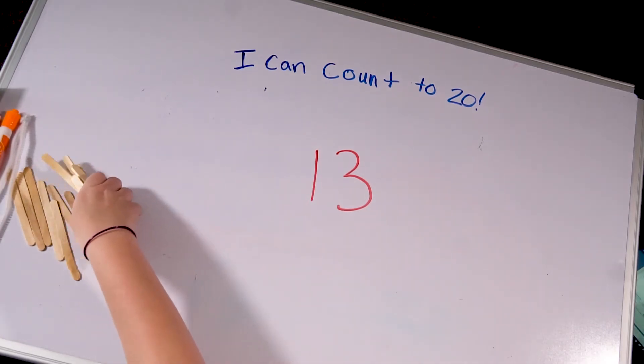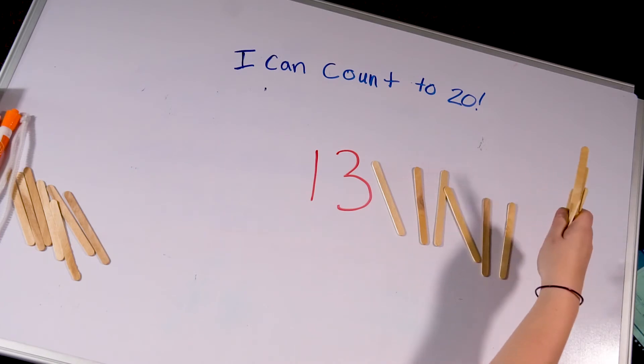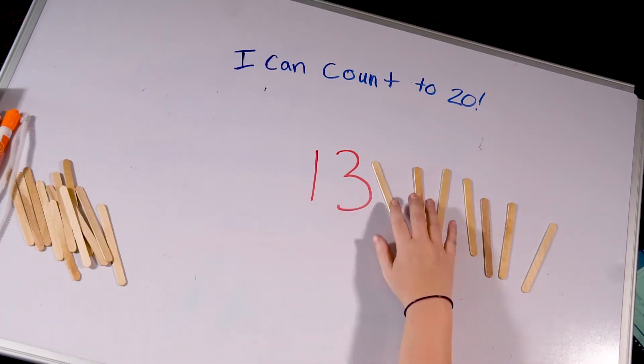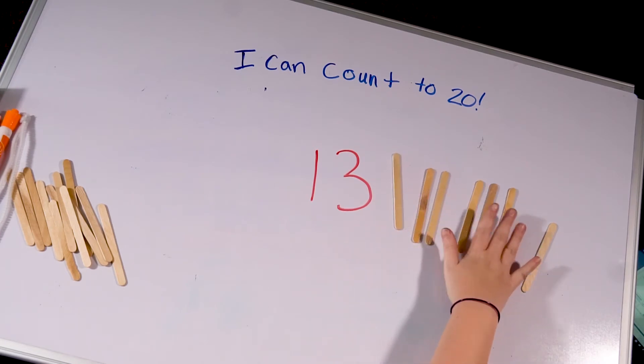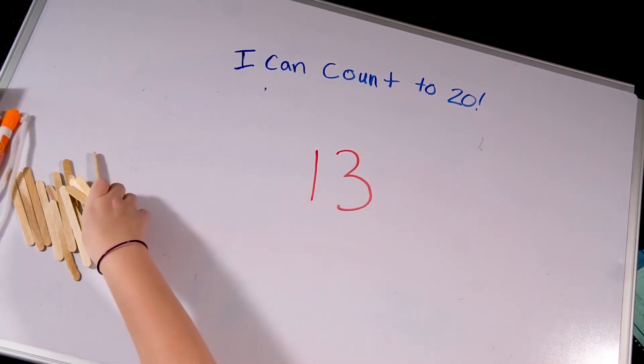Let's check your work. I bet you did a great job. 13, 14, 15, 16, 17, 18, 19, 20. Let's count that again to make sure you got all those numbers in between. 13, 14, 15, 16, 17, 18, 19, 20. Did you do it? Good job.